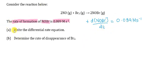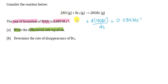The first question asks you to write the differential rate equation. The differential rate equation, if you refer to the lecture notes, shows the relationship between the rate of disappearance of the reactants with the rate of formation of our product.